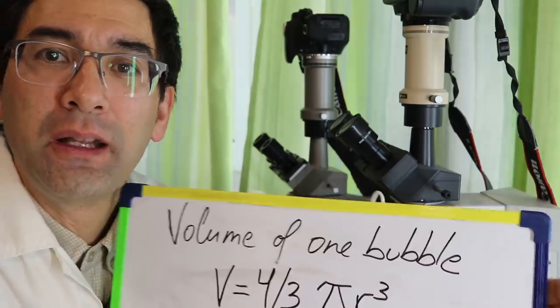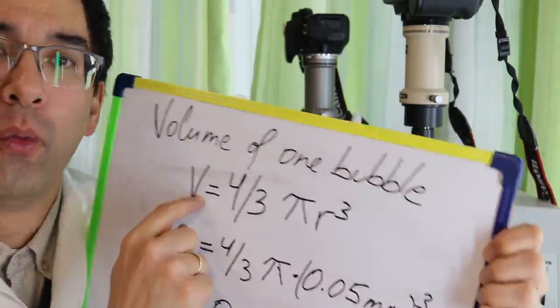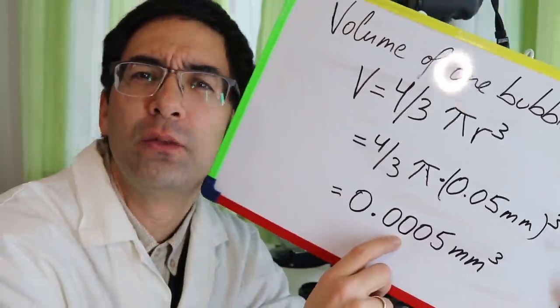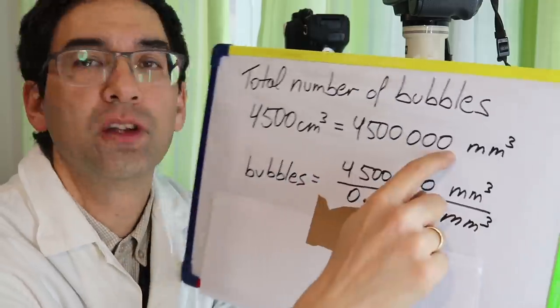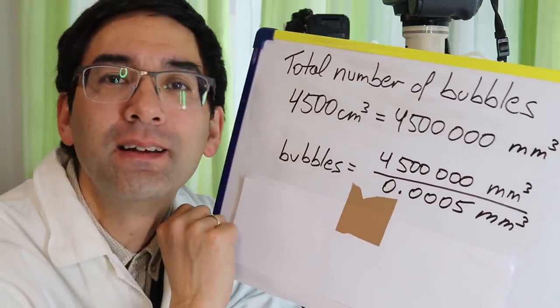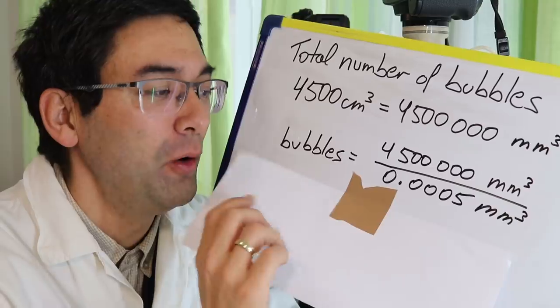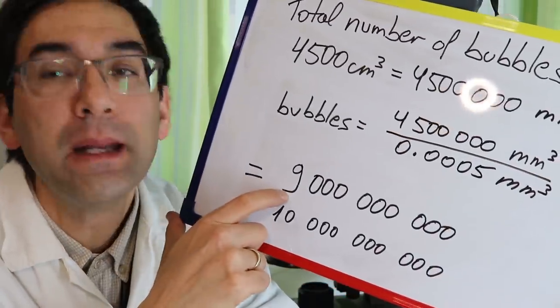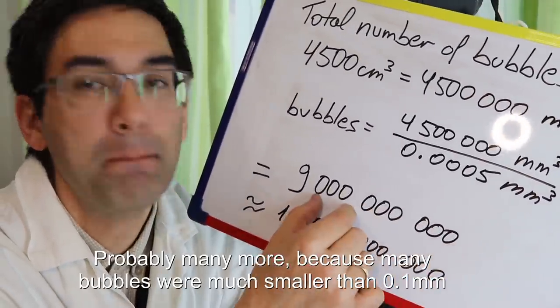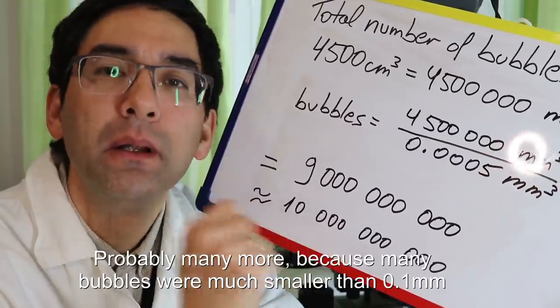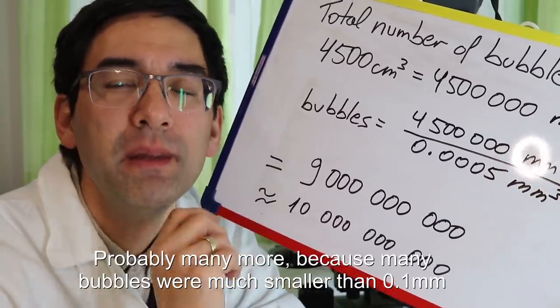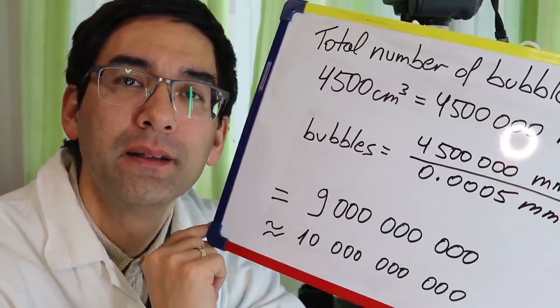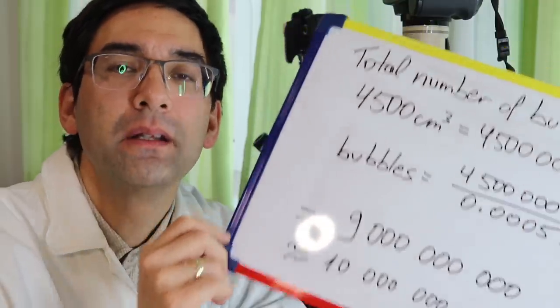So now let's calculate the total number of bubbles. And then I get the result. I'm all excited. I hope you are too. That's basically the value. I get nine billion bubbles. That's a million. That's a billion. So nine billion bubbles. We rounded 10 billion bubbles. So in one can of foam, that's quite a nice large number.